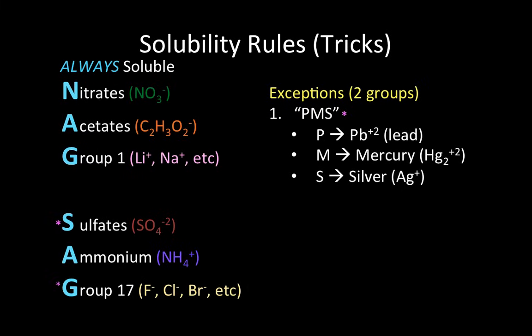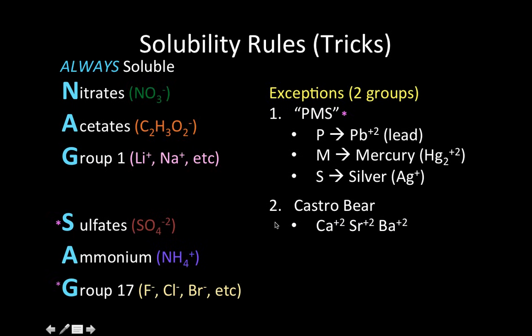Now let's move on to the second and final exception, called castorware. Castorware is calcium, strontium, and barium — all from the alkaline earth metal group — and castorware is never soluble with sulfates. We're going to put a neon green asterisk next to castorware and next to the sulfates. So NAGSAG is not always soluble, but it's almost always soluble.